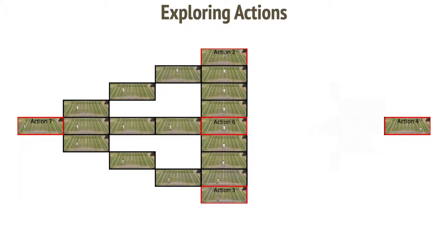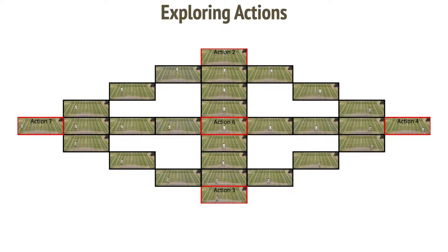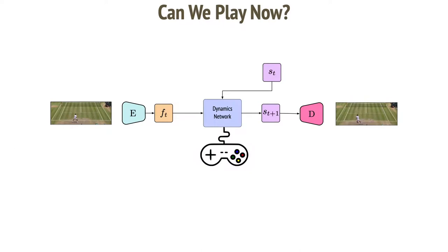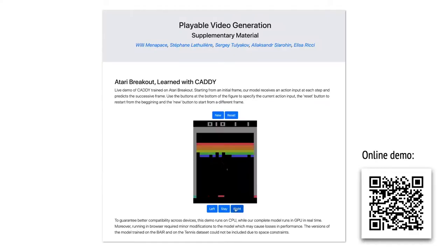At inference time, only the encoder, the decoder, and the dynamic networks are used. We connect the dynamics networks to a game controller of the user, and the user can play a video. We implemented a demo that runs in a browser purely in JavaScript. We perform a user study to assign the actions to their one-hot encodings. So, let's play now.